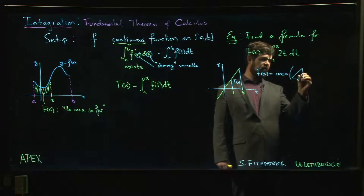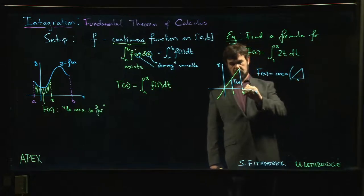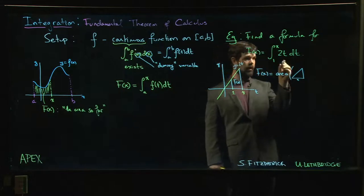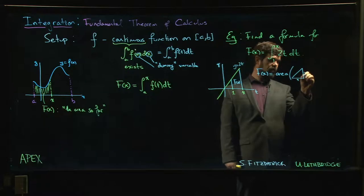It's the area of this big triangle with base X, height—well, when t is equal to x, y is going to equal 2x because y equals 2t. So this side is 2x.